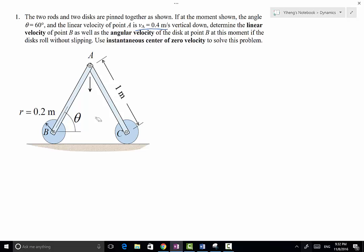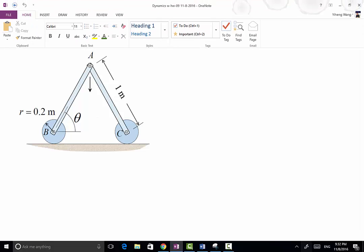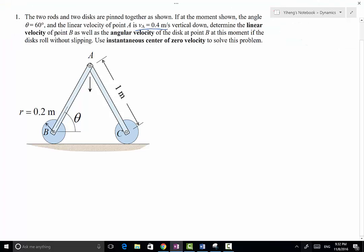Because we know that if the disk rolls without slipping, then the direction of velocity at point B must be horizontal. So the velocity of point A has a known direction that is vertical down, and point A and point B are both on this rod AB, therefore they belong to the same rigid body, and we know the directions of two velocities on this rigid body.